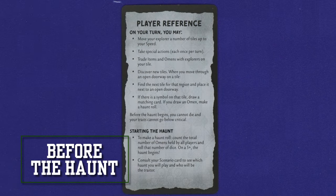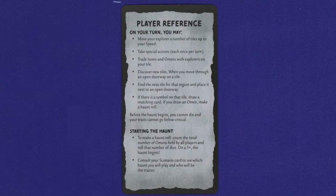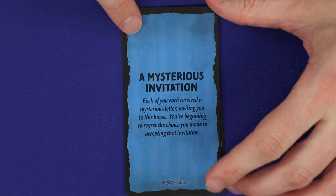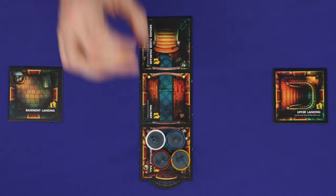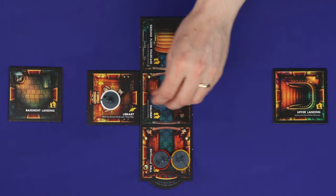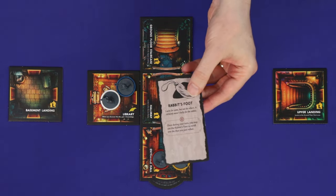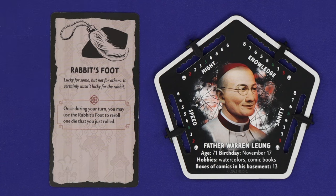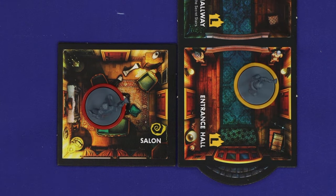Betrayal at House on the Hill is played in turns, starting from the first player and going clockwise around the table. During the first half of the game, your characters don't even know they're going to be betrayed — they're simply going to be exploring this haunted mansion for the reasons listed on your blue scenario card. Most of your turns will be spent moving, exploring, and resolving new rooms. Besides this, you'll be able to trade things with other players in your room, or use a special action, which is anything you encounter which has this icon. You'll be able to keep taking actions until either you choose to end your turn, you've run out of things to do, or once you've just finished exploring and resolving a newly placed room.